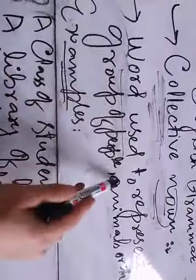So what is a collective noun? A collective noun is a word that is used to represent a group of people, animals, or things. It is the word that represents a group — either a group of people, a group of animals, or a group of things.